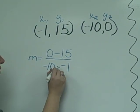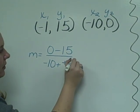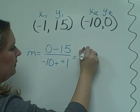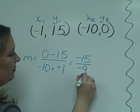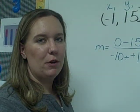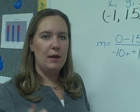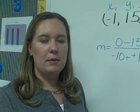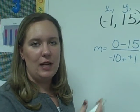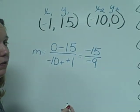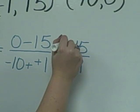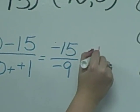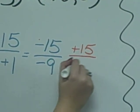The minus negative turns to plus positive. We have negative 15 divided by negative 9. If you remember from integers, a negative divided by a negative is always a positive. So we're going to take our two negatives, negative 15 over negative 9, and make them positive 15 over positive 9.